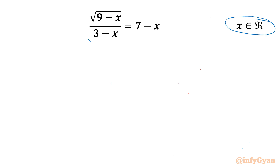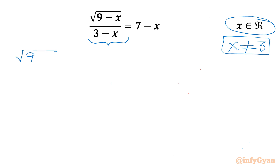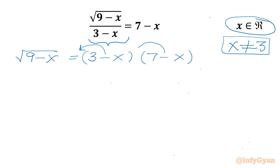Let's get started by noting our denominator cannot be 0, so x cannot be 3. Now I can cross multiply, giving square root of (9 minus x) equal to (3 minus x)(7 minus x). Taking minus common from each bracket: minus(x minus 3) times minus(x minus 7), and minus times minus becomes plus.